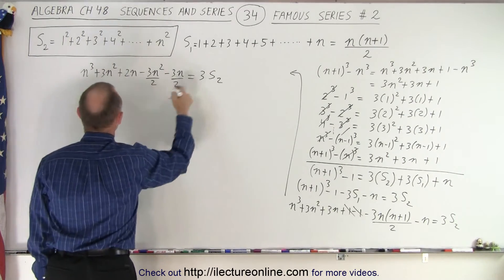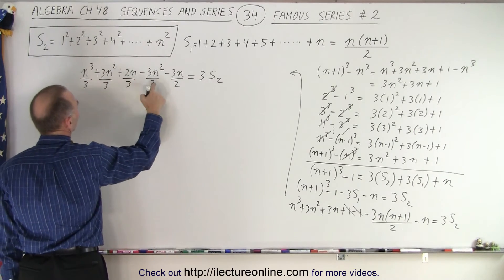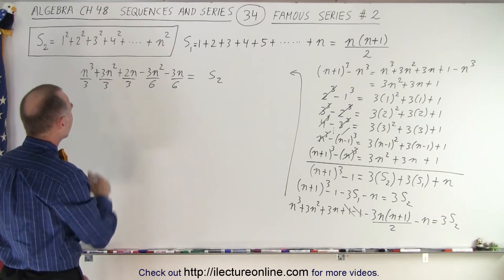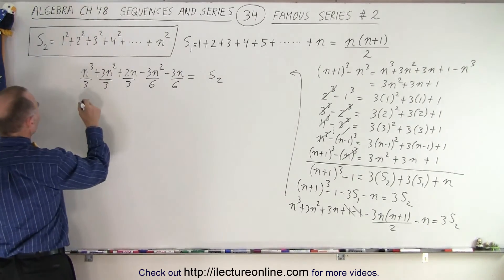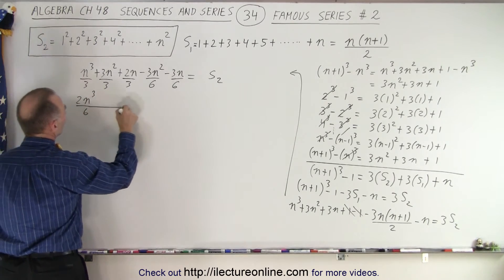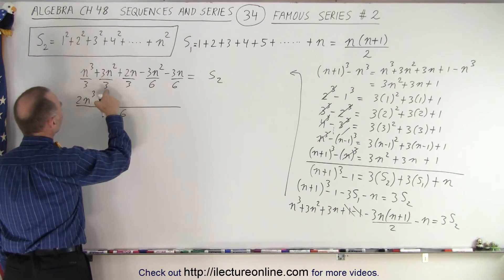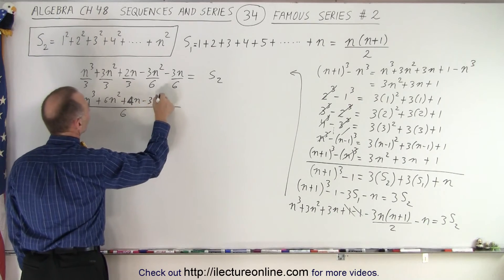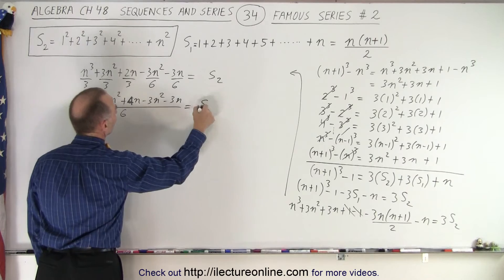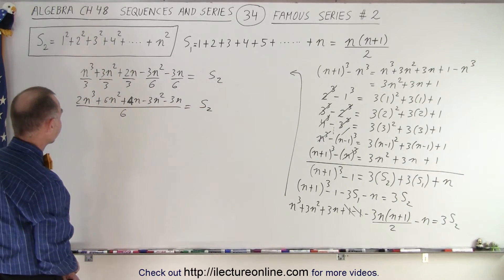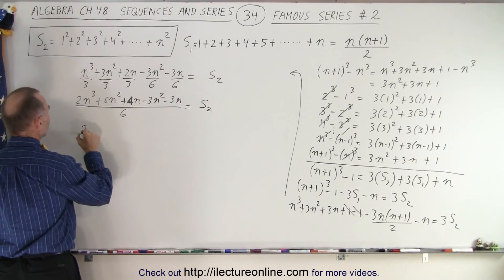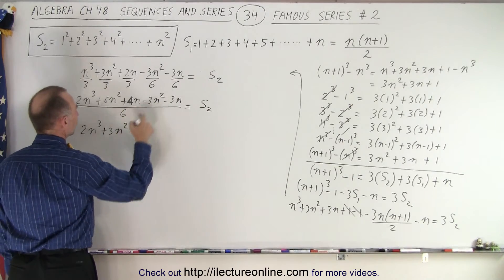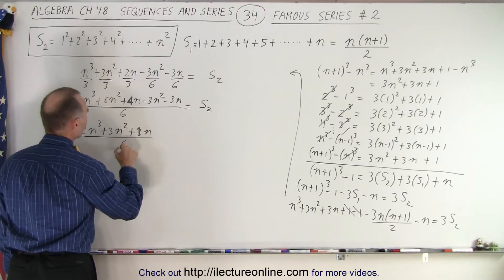We can divide everything by 3 to get rid of the 3, so dividing by 3 here means the denominator becomes 6 for those terms with a 2 in the denominator, and the 3 on the right is gone, leaving S2 isolated. Finding a common denominator of 6: we have 2n cubed over 6, plus 6n squared over 6, minus 3n squared over 6, plus 6n over 6, minus 3n over 6. Wait — the 2n term, when going from denominator 3 to 6, becomes 4n over 6. So 4n minus 3n is just n, giving plus n over 6. Combining like terms: 2n cubed plus 3n squared plus n, all divided by 6, equals S2.